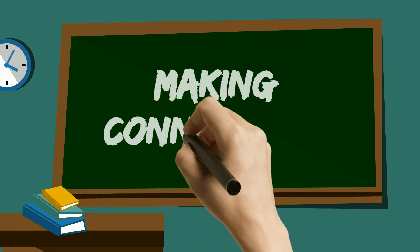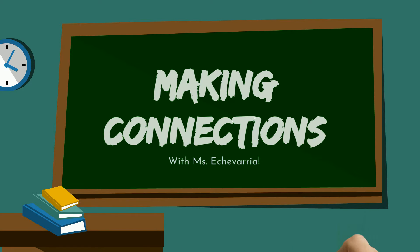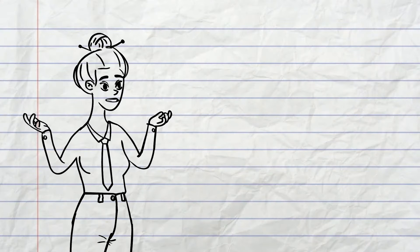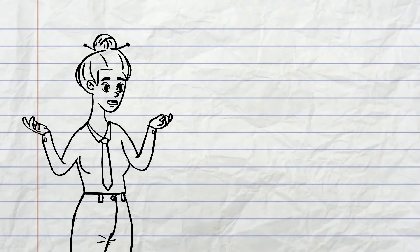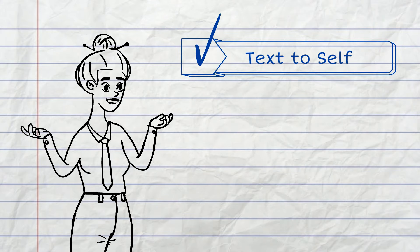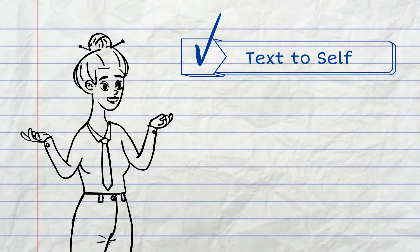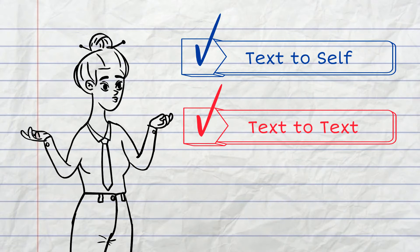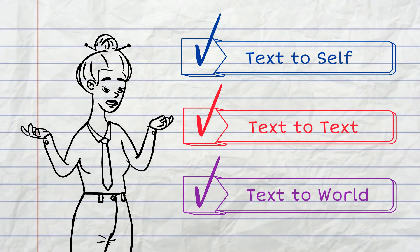This week, we will be learning about making connections. When we read, we find ways that the text is like things in our own lives and other texts we have read. There are three ways we can make connections to the text: we can use text-to-self connections, text-to-text connections, and text-to-world connections.